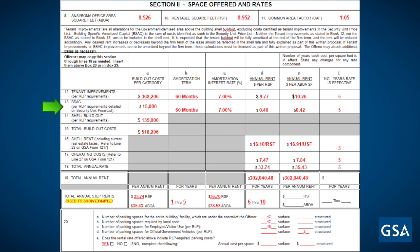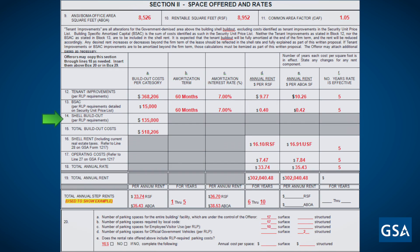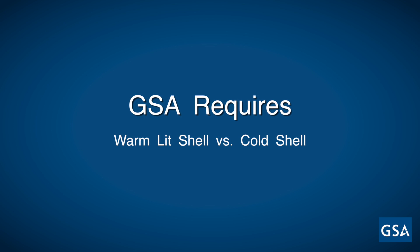Box 13 concerns building-specific amortized capital. You would follow the same steps to calculate the amortized cost in Sections D and C as you would with the annual rent for the tenant improvement rent per square foot. For Box 13A, you would either provide a detailed breakdown of the security costs in the Security Unit Price List attachment or listed in Section 3 of the RLP, depending on the requirements. Box 14 would be the total shell build-out per RLP and lease requirements. GSA requires a warm lit shell versus a cold shell that's normally standard with commercial leases.